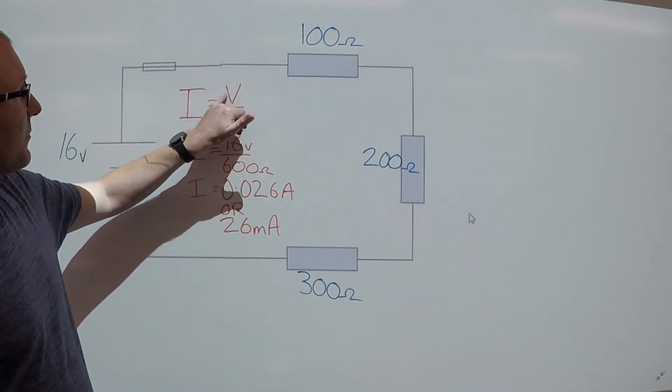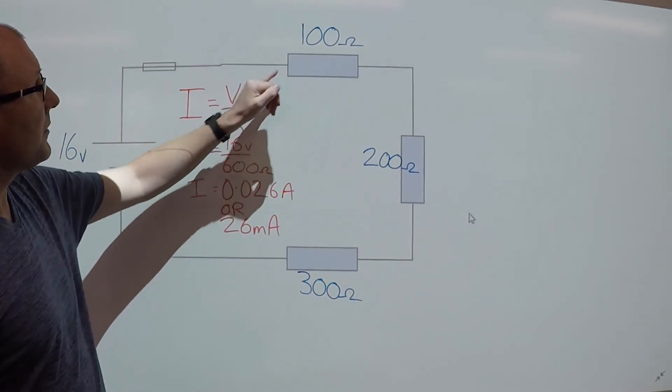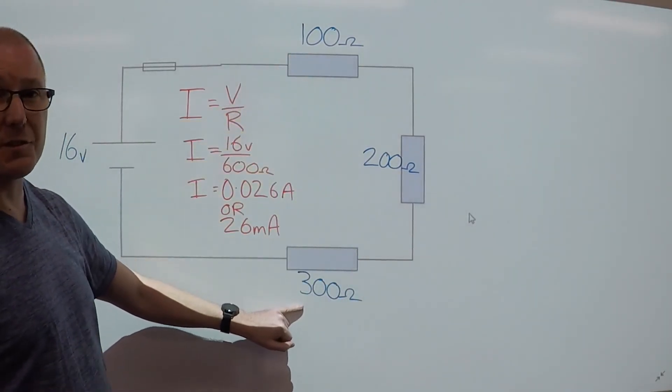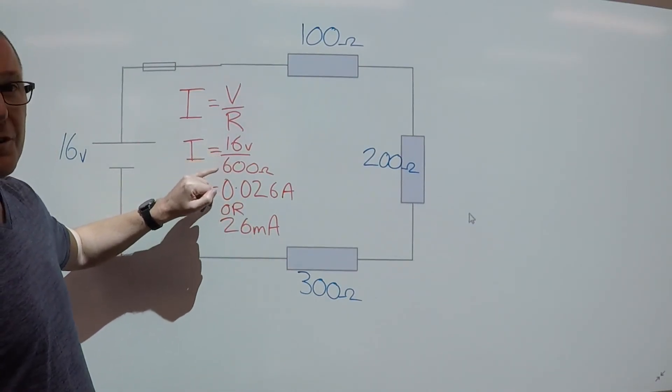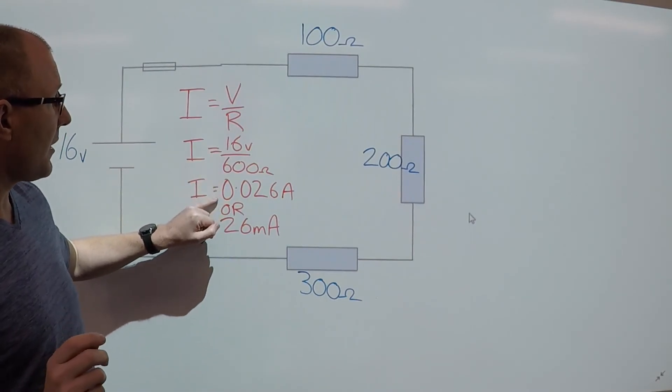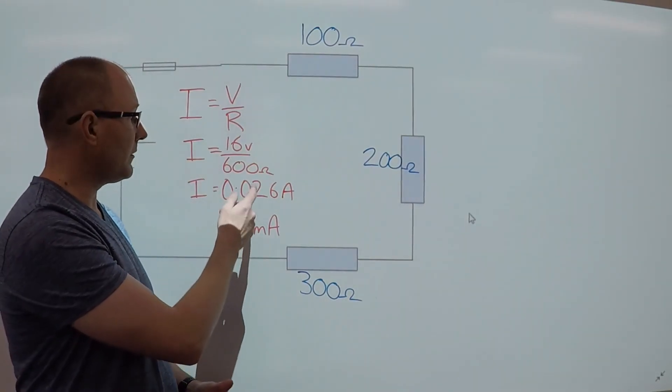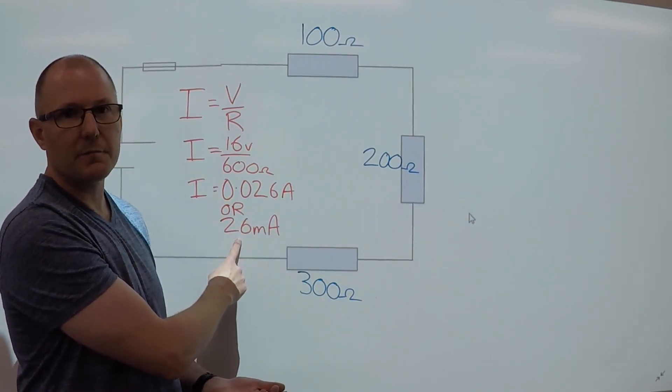So all we need to do is find the volts and the resistance. So we've got 16 volts and we've added up the total resistance, and we have 16 volts divided by the 600 ohms of resistance. So we have 0.026 amps or 26 milliamps.